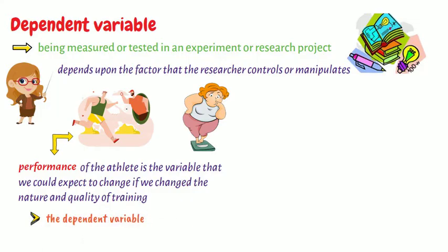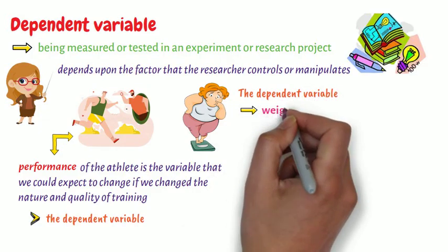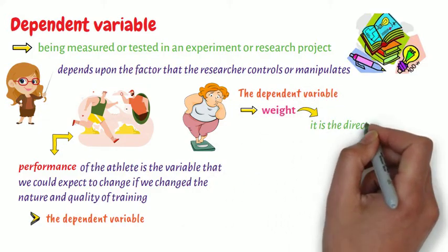In the second example, the dependent variable is weight because it is the direct result of the changes in one's diet.